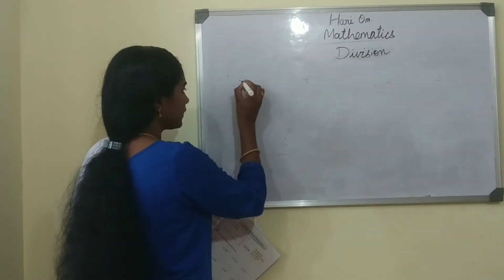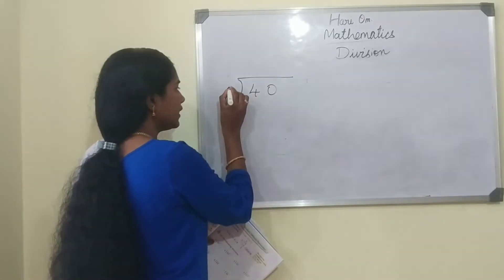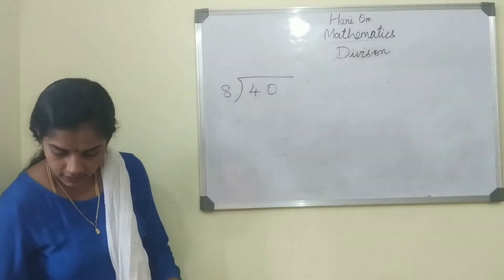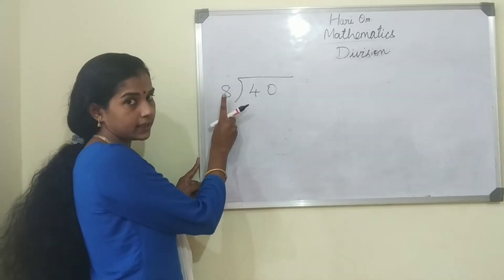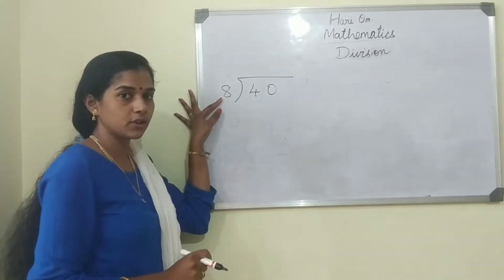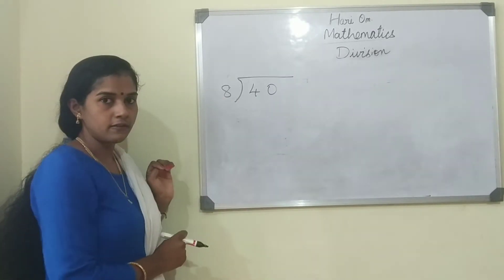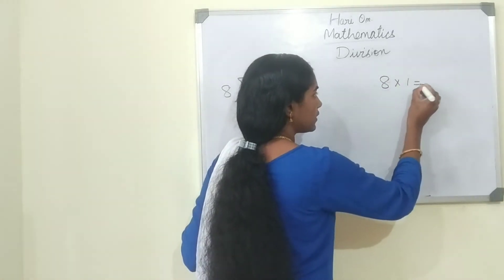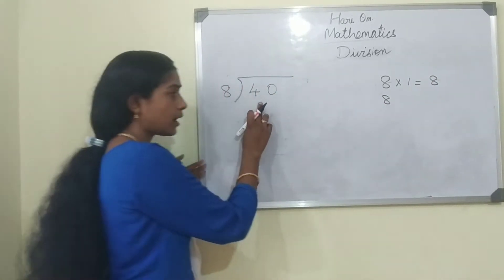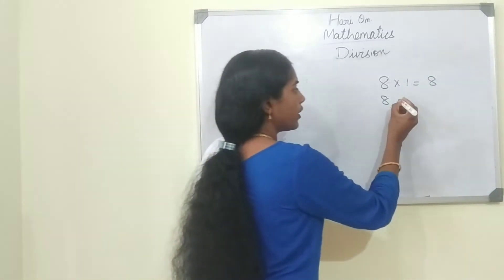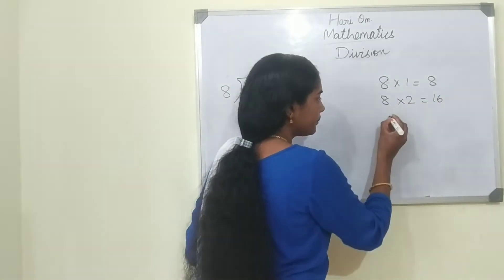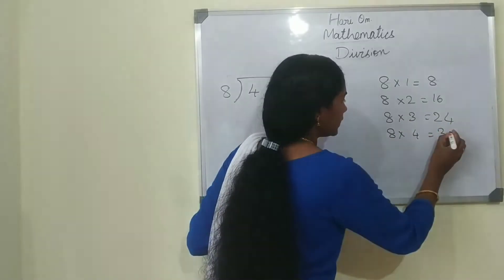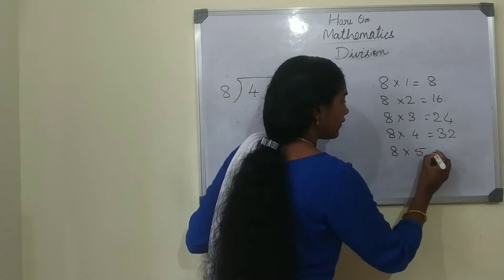First question is 40 divided by 8. So 40 divided by 8 — we should know the tables of 8. 8 how much are 40? Do everyone know the tables of 8? Start telling the tables of 8: 8 ones are 8, 8 twos are 16, 8 threes are 24, 8 fours are 32, 8 fives are 40. So we got the number 40.